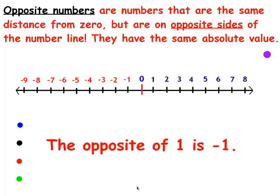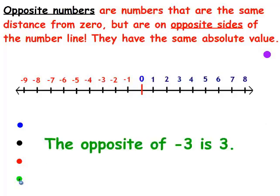The opposite of 1 is negative 1. Can you see they both have the absolute value of 1? Because they're both a distance of 1 away from zero, but they're on opposite sides of zero. And one last try: the opposite of negative 3 is 3. There's your negative 3, and there's your 3. They're both on opposite sides of zero, and they both have the absolute value of 3. The absolute value of negative 3 is 3, and the absolute value of 3 is 3.